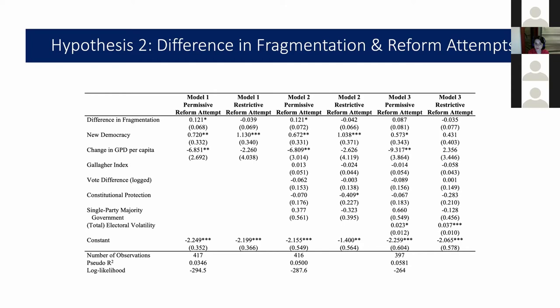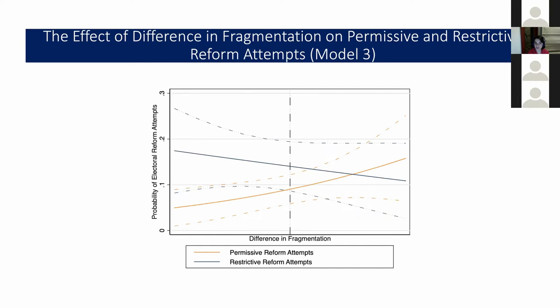In sum, this paper incorporates failed reform attempts — which are also part of the electoral reform process — and offers an explanation for how party system competition can affect a government's electoral reform decisions. I use the ideological proximity of small parties to the main government and opposition parties to create a new variable measuring the asymmetrical effect that party system fragmentation can have on competition between the main parties. I'm open to any questions from the floor. Thank you.